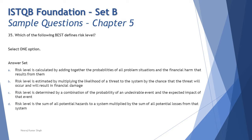Option A says: a risk level is calculated by adding together the probabilities of all problem situations and the financial harm that results from them. They are talking about two attributes, which looks interesting, but they mention 'all problems' — risk is an independent thing. There may be many risks, and each risk has to be independently measured for its likelihood, not as a calculation of all problems combined.